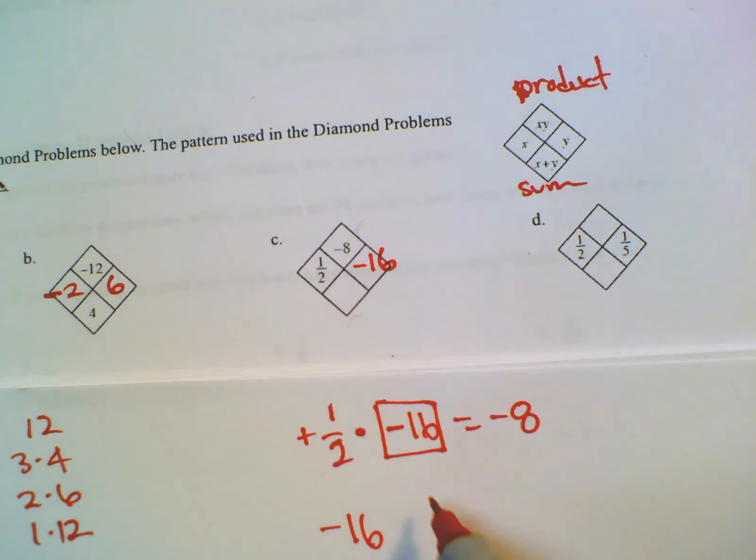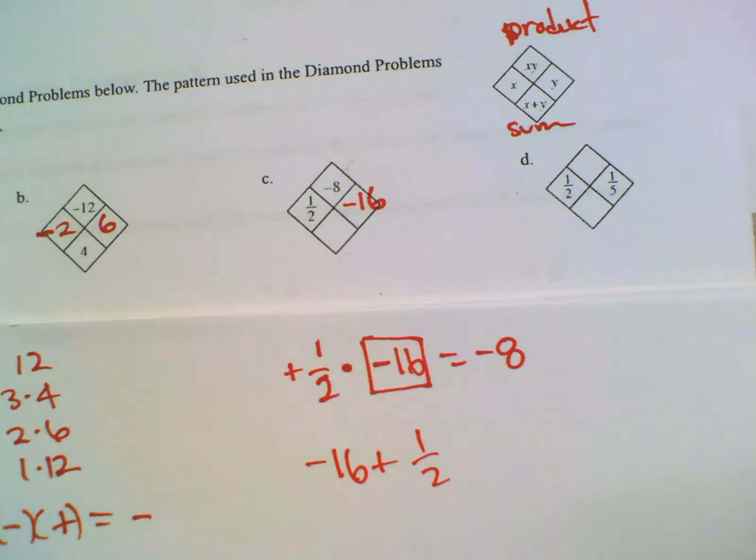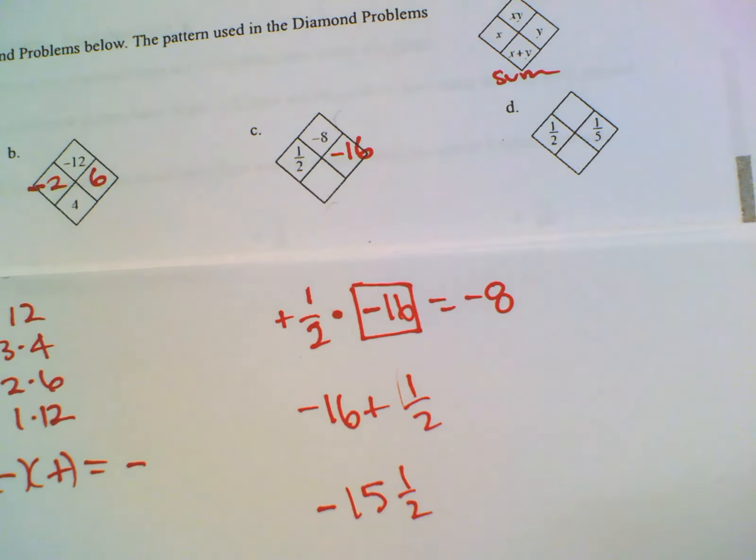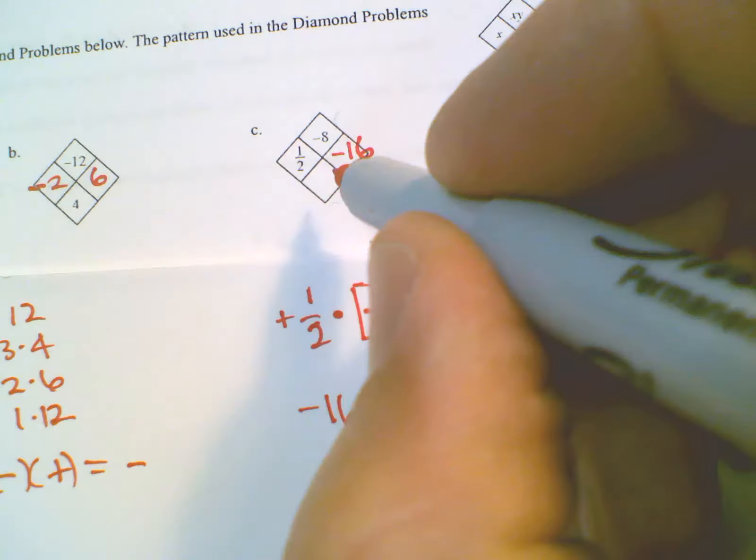And then now the sum, you're going to say negative 16 plus one half. In this case, when you add a positive and a negative number, you really subtract them. So what is 16 minus one half? That'll be 15 and a half. And then 15 and a half, is it going to be positive or negative? It's gonna be negative because there's more negatives than there are positives. So that's gonna be my sum, negative 15 and one half.